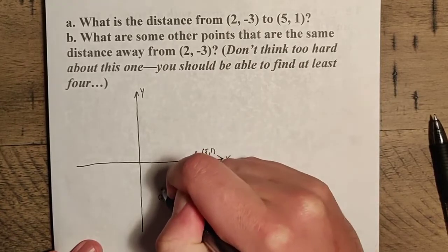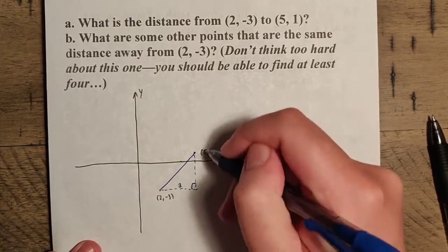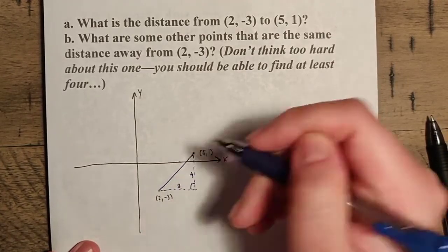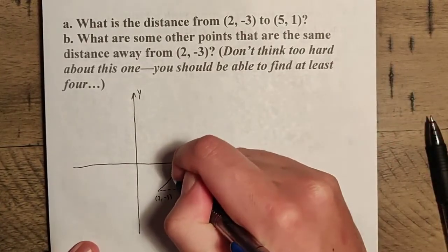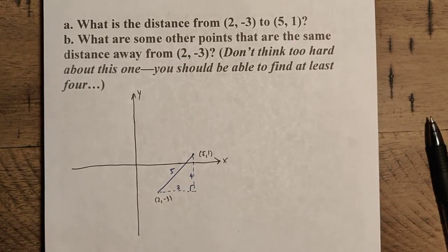So we know that this distance here, let me just go ahead and draw that in. From two to five, that's three here. And then from negative three to one, that's up four. So this is going to be a three, four, five right triangle. Therefore, this distance is five. You can verify this using the distance formula.